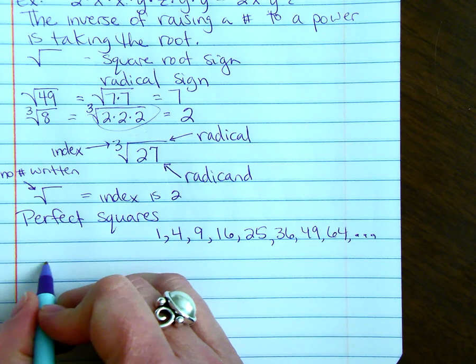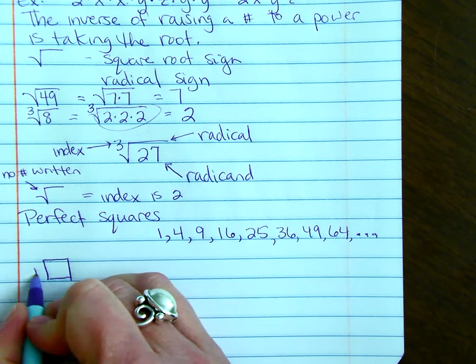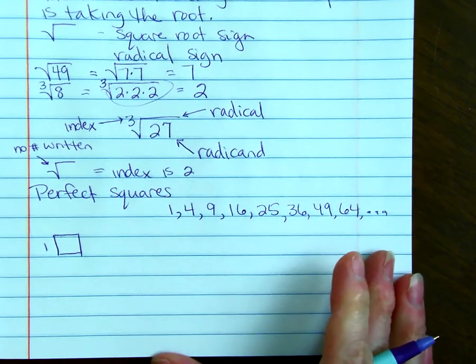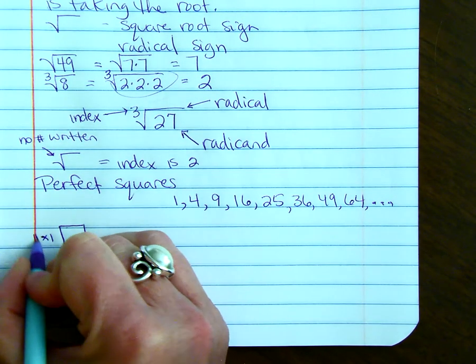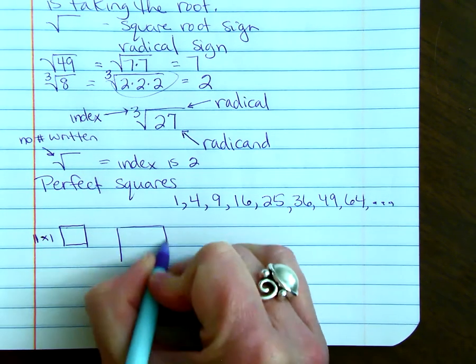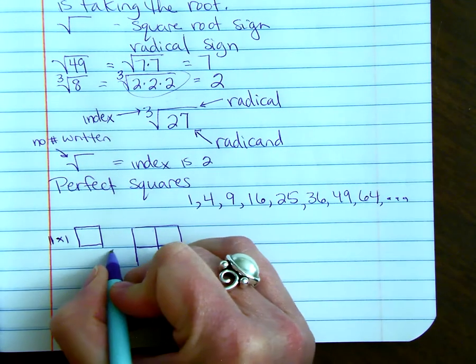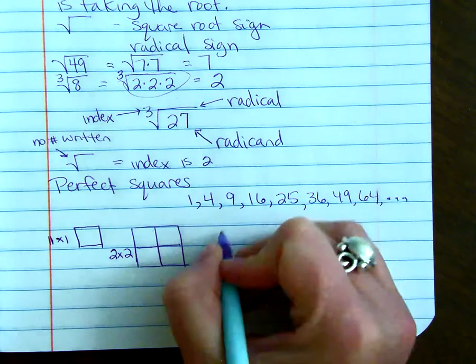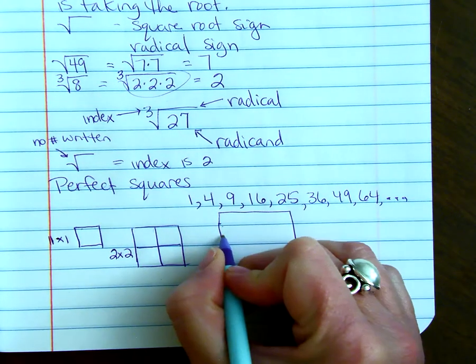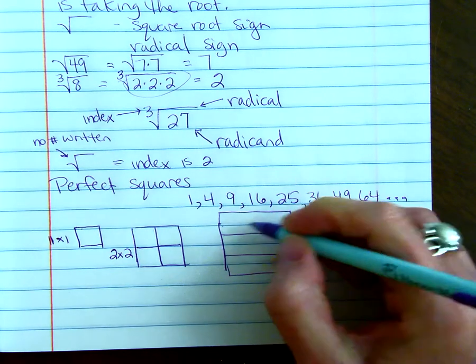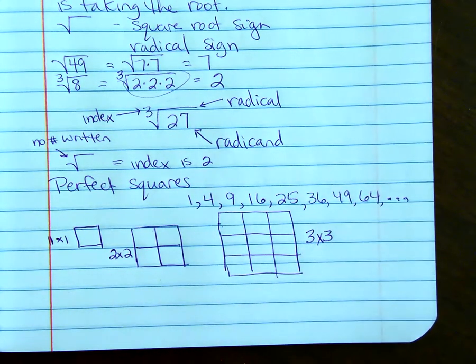They're called perfect squares because if you think about a square with side length 1, the area is 1·1. If the side length is 2, the area is 2·2. If the side length is 3, the area is 3·3.